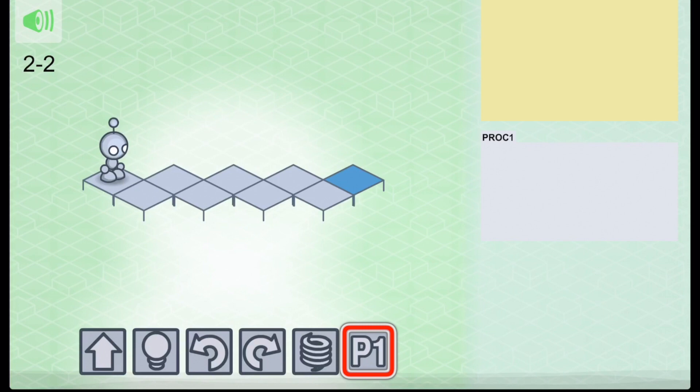Finally the P1 command tells Lightbot to do all of the commands that are kept in the procedure 1 file located here. This allows you to repeat a series of commands easily.